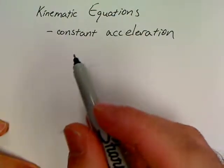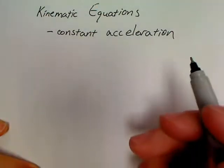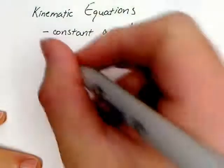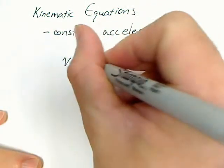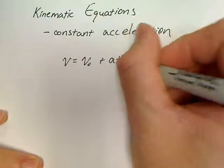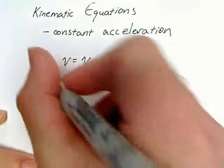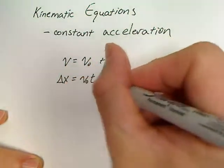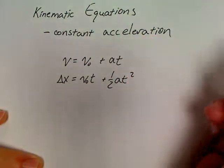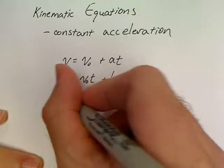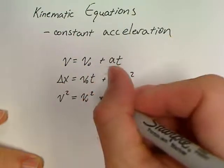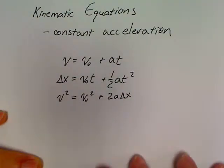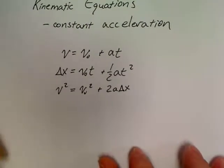I'm not going to derive the equations right now. I have a separate video on deriving those equations if anyone's interested. But the equations are V equals V₀ plus AT, delta X equals V₀T plus 1/2 AT squared, and V squared equals V₀ squared plus 2A delta X. So there's our three equations.